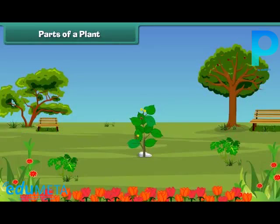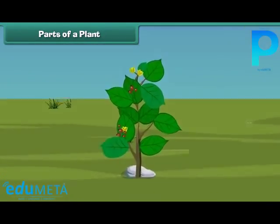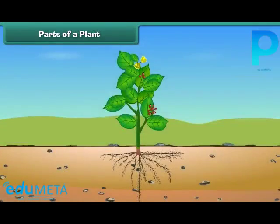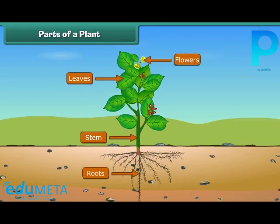Friends, let us discuss various parts of a plant. The main parts of a plant are roots, stem, leaves, flowers, and fruits. Let us know them one by one in more detail.